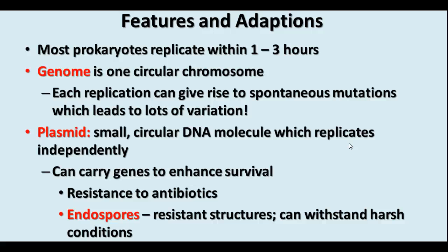A plasmid is a second circular piece of DNA which replicates independently of the genome of the bacterium, and this oftentimes carries genes to enhance survival. One gene very often found on a plasmid is resistance to antibiotics. Some bacteria can also produce endospores, which can withstand harsh conditions.